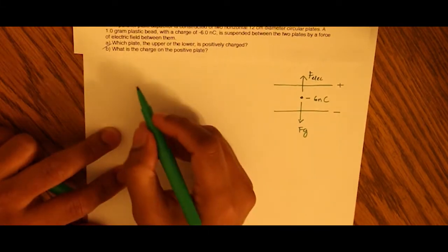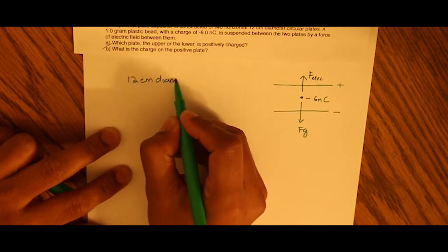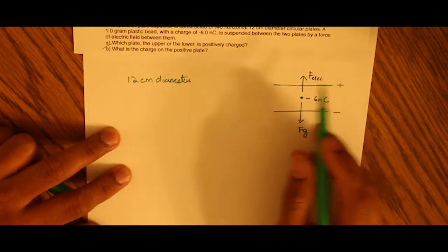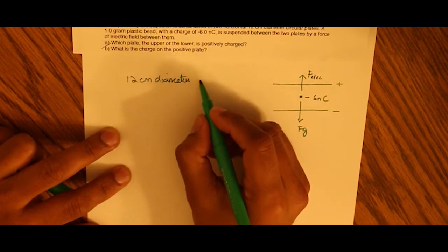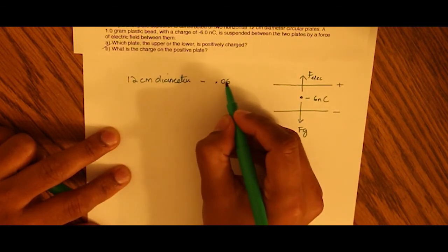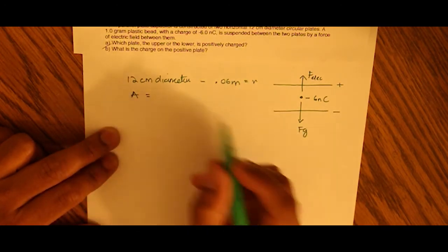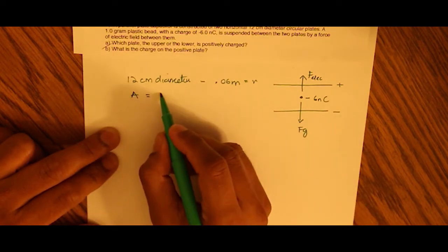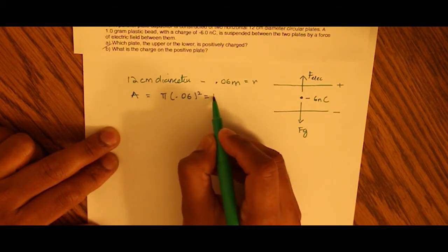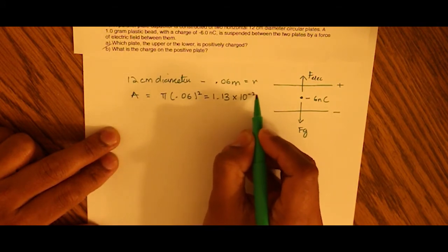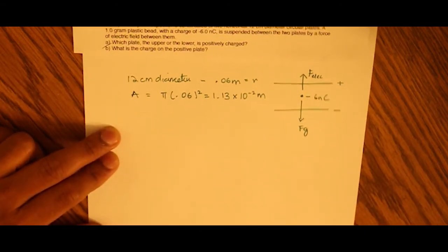So we know that we're dealing with 12 centimeter diameter electrodes. Each is a circular electrode of 12 centimeters in diameter. Therefore the radius is 6 centimeters or 0.06 meters. And so we can calculate the area of the electrode as pi r squared, which is pi of 0.06 the whole squared, which is 1.13 times 10 to the negative 2 meters. So the top plate is positive charge. That's the first question. So we already answered that.